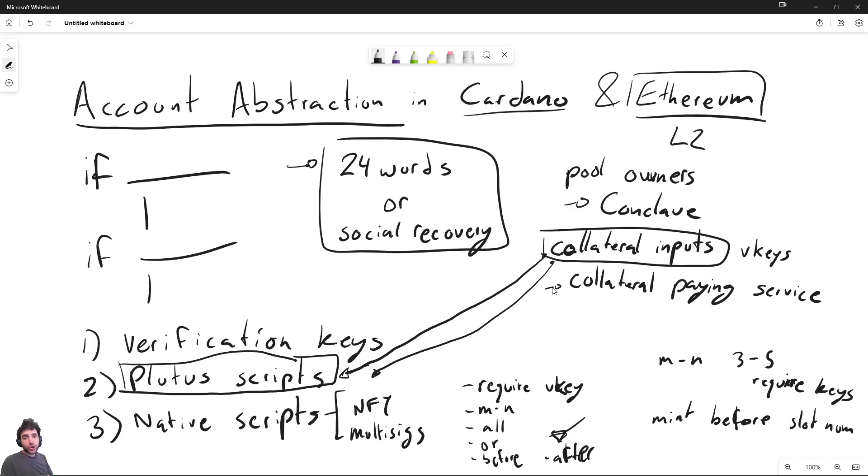So one way we can get around this is by having a collateral paying service where basically every time you create a transaction for your wallet, you're outsourcing this collateral to a third party. So for example, DC spark could run a server where you have the DC spark server over here and the user submits a transaction to the server, an unsigned transaction. DC spark checks the transaction, makes sure everything looks good and the transaction will not fail. And if it looks good, they will return the transaction or some kind of transaction success message plus a collateral input.